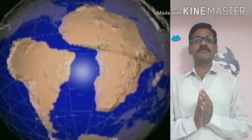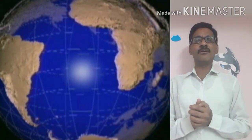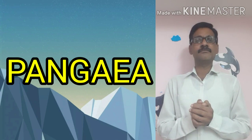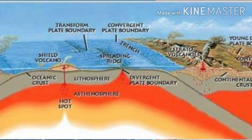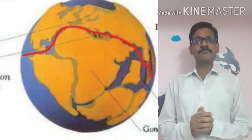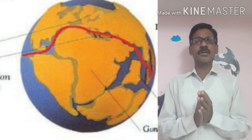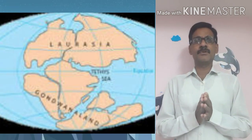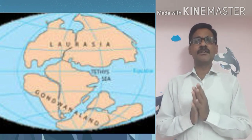This theory is called the Continental Drift Theory. According to him, he imagined a supercontinent called Pangea — meaning 'whole land' in Greek. This Pangea was broken into several parts that moved, collided, and merged. Then Pangea broke into two parts: Laurentia or Angara Land, and Gondwana Land.